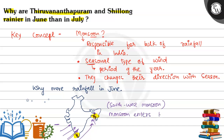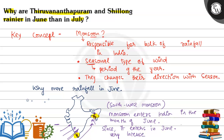The monsoon enters India in the month of June. Since it enters in June, the monsoon is very intense in that month — there is direct and strong moisture availability. In the month of July, the winds continue but the availability of moisture reduces. That is why June receives more rainfall compared to July.